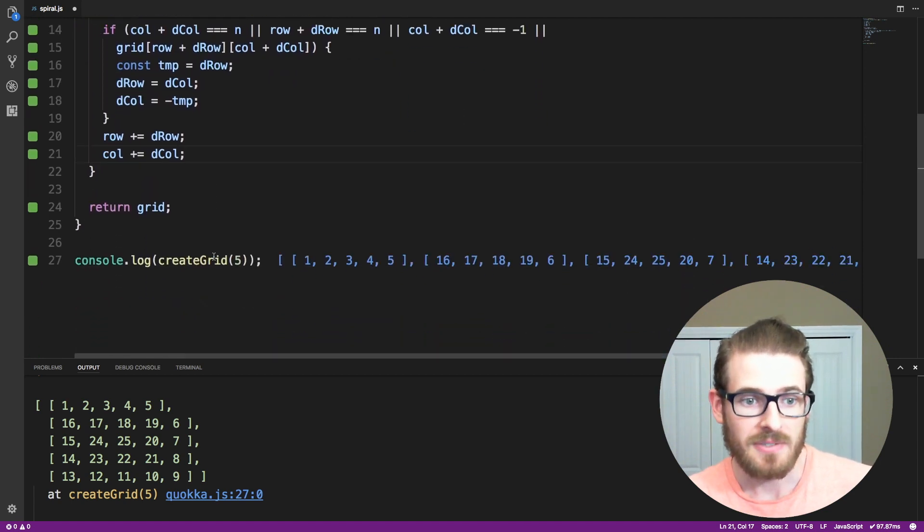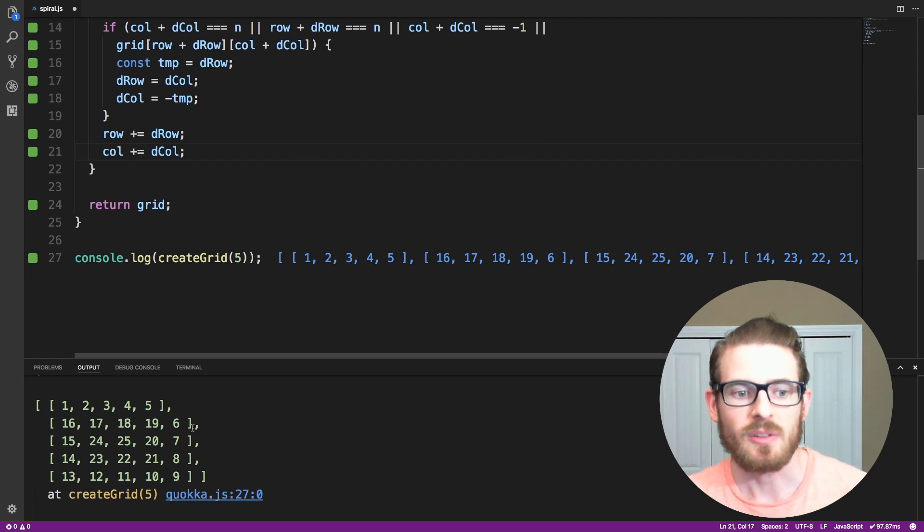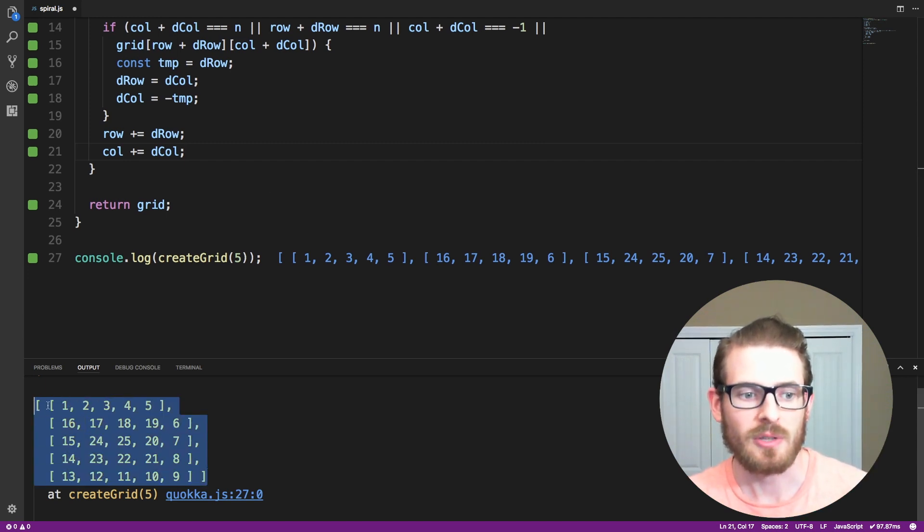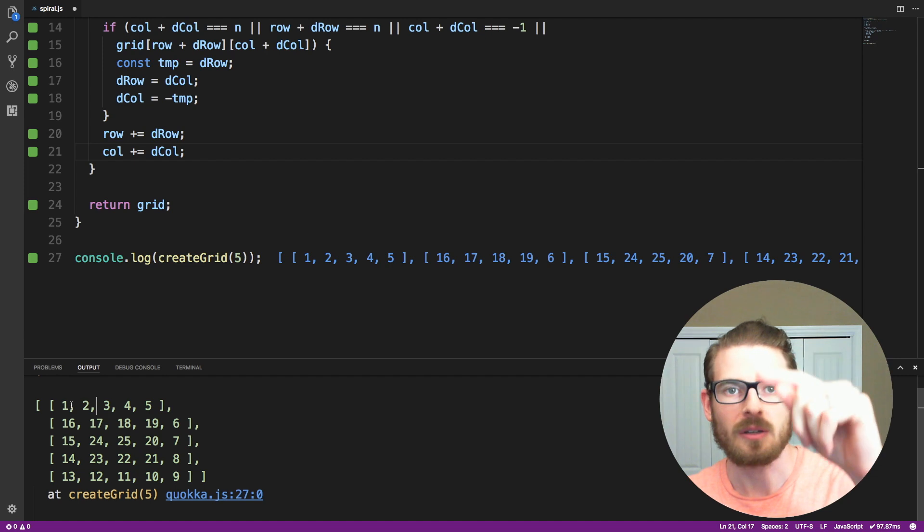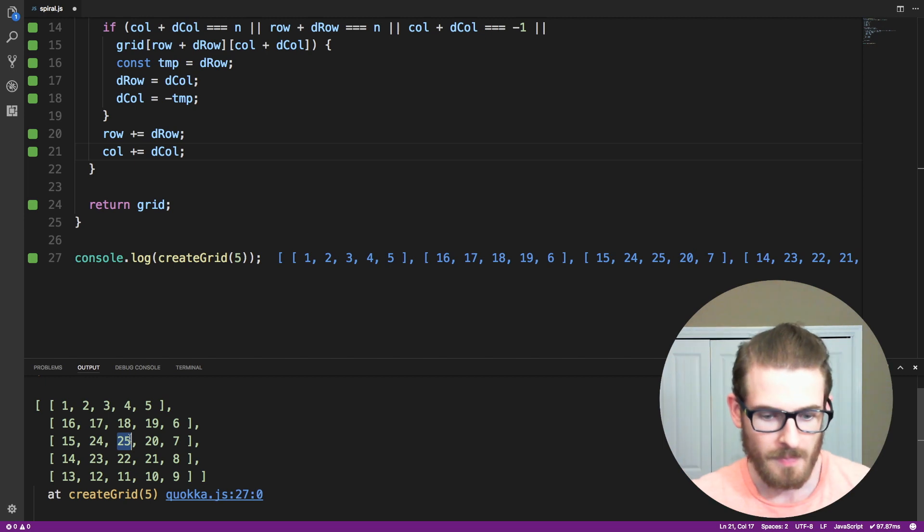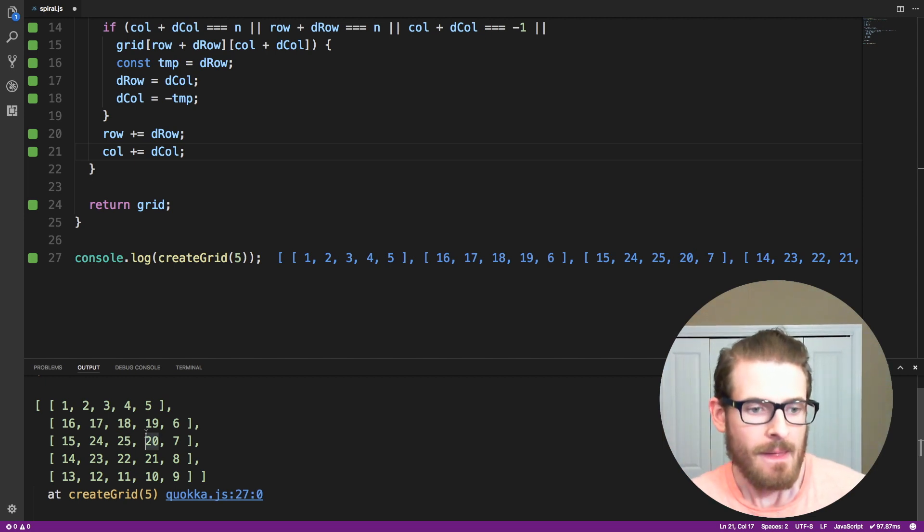So that basically wraps up implementing the solution that we did on the whiteboard in JavaScript. You see here at the bottom of the console log, it's printing out the correct row, where it's all spiraling in a clockwise fashion from 1 to n times n. So if you notice, it ends at 25, and the n that we started with was 5. So 5 times 5 is 25.